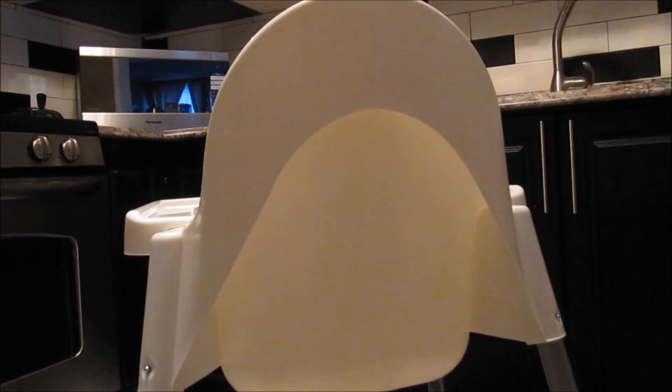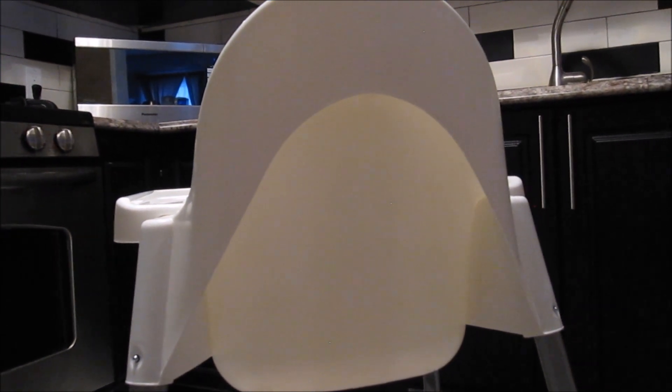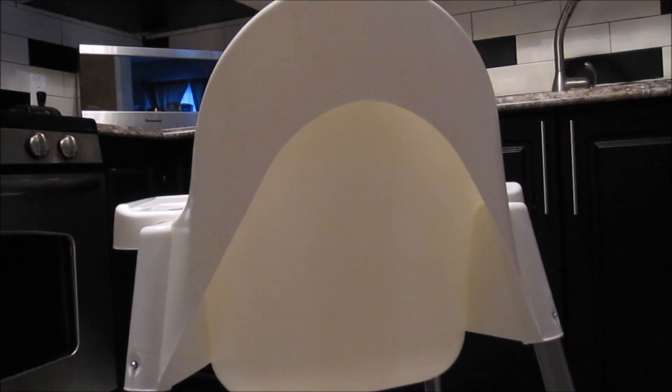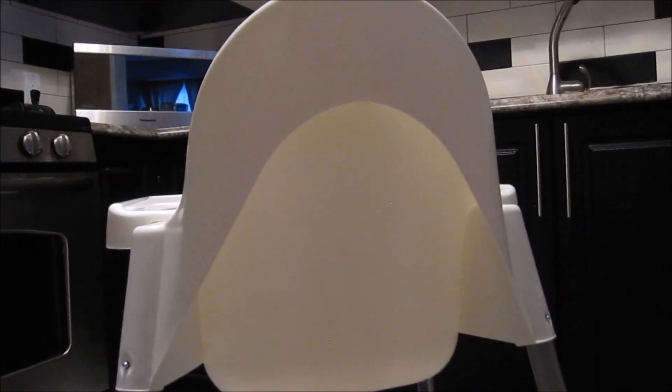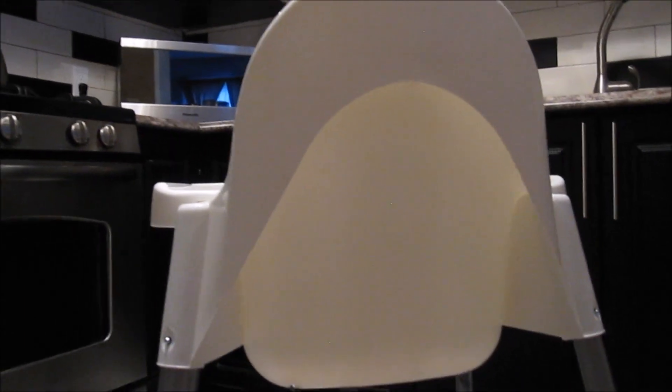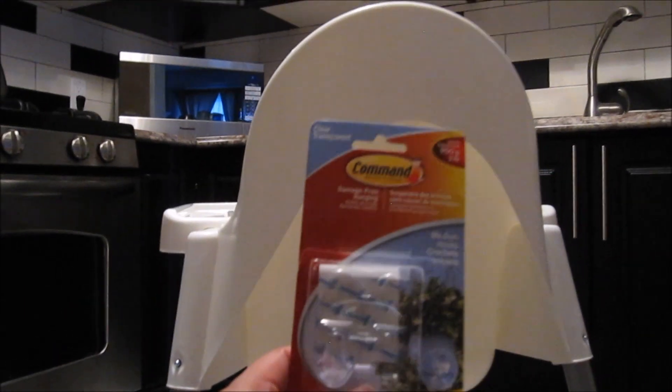So the second add-on we can do for this IKEA high chair is storage. Specifically bibs. When our baby's feeding, you need to gain access to a bib really quickly because she's messy. We found out we can do it at the back.